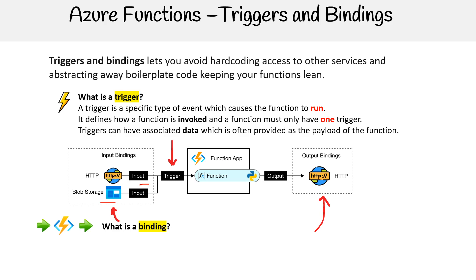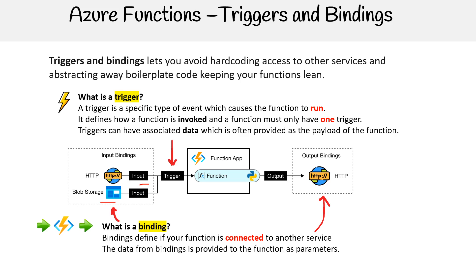Let's take a look at what a binding is. My arrows are a little bit messed up, but the idea is bindings define how your function is connected to another service. We have input bindings and output bindings. The data from bindings is provided to functions as parameters. Bindings are optional, and a function can have multiple input and output bindings.